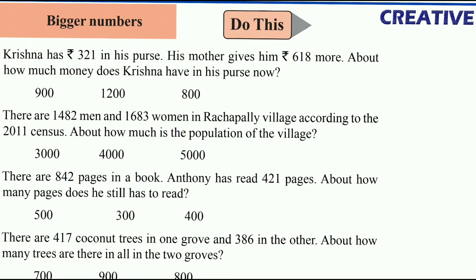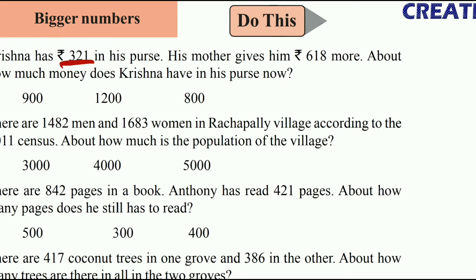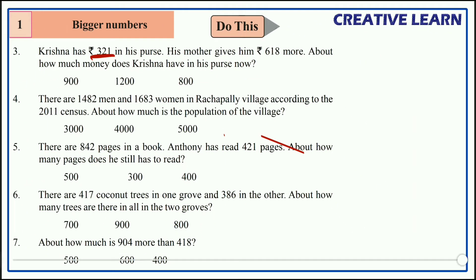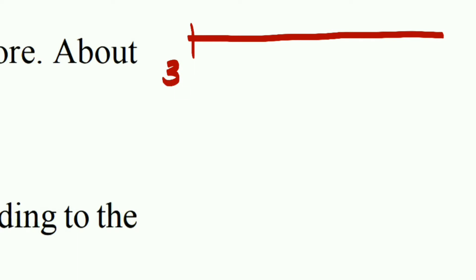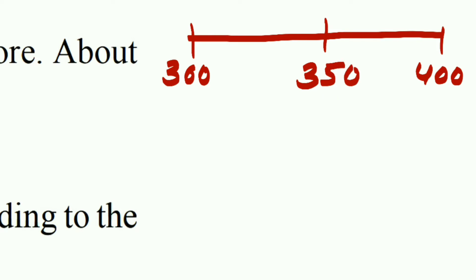We don't need to do the exact calculation — we just have to estimate the approximate values, meaning round figure numbers. For the first number 321: the range is 300 to 400, with the middle number being 350. Now, 321 comes before 350.